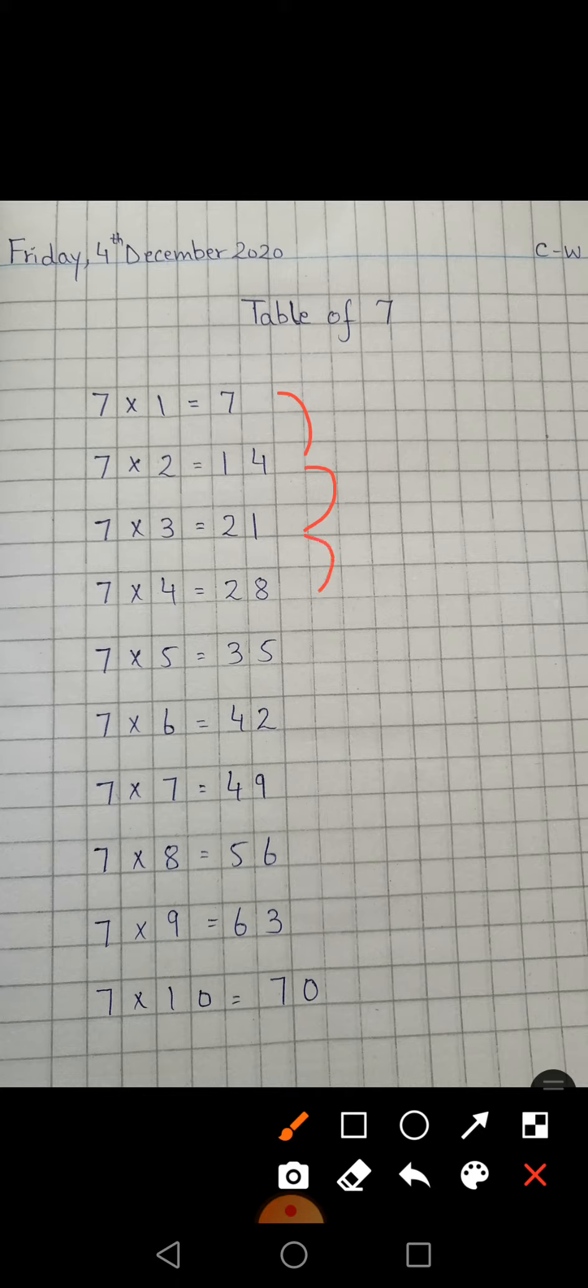When you add 7 to 21, you get 28. Then after adding 7 to 28, you get 35, then 42, then 49, then 56, 63, and 70.